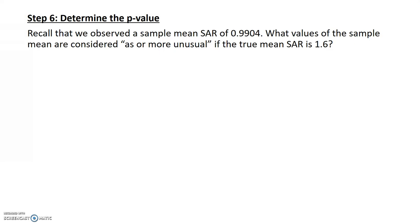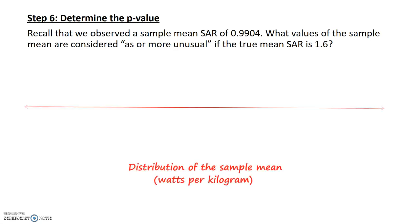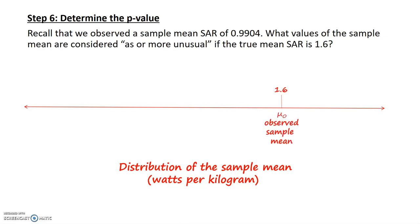If I draw a number line which represents the distribution of sample means, I draw the null hypothesized value, which in this case was 1.6 watts per kilogram. Then on this number line, I write down where the observed sample mean is. It would fall about here on the number line.